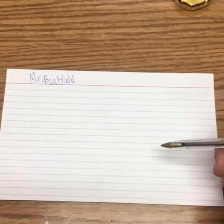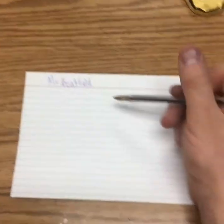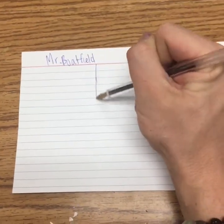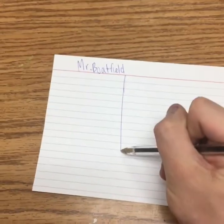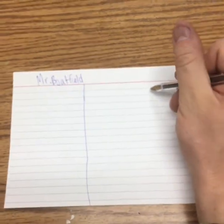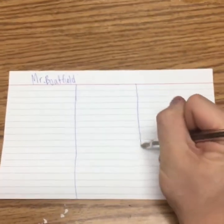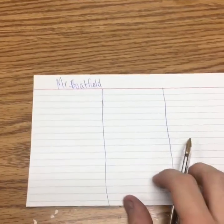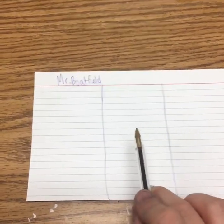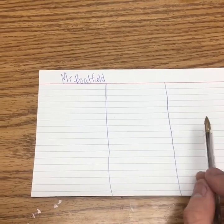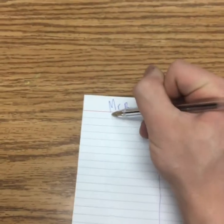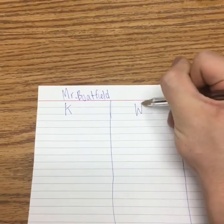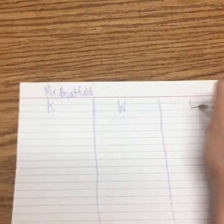What you need to do first is split up the bottom of your note card into three little sections. We're going to do what's called a KWL. I'm going to put a K here, a W here, and an L here.